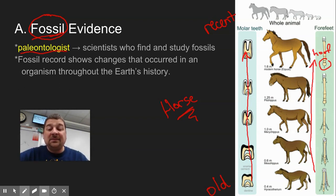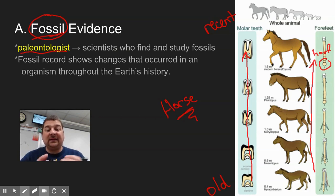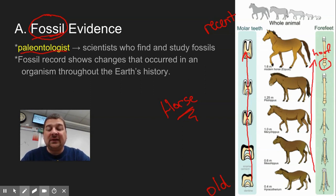There are some missing links and pieces in the fossil record. Some scientists will argue they were either not fossilized or we just haven't found those missing links yet. As we continue to find more fossils, we'll continue to fill in more gaps in the evolution of different creatures.